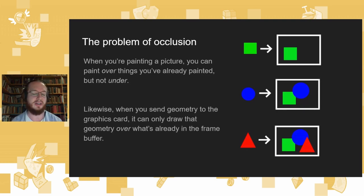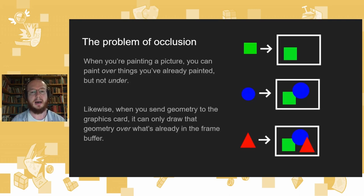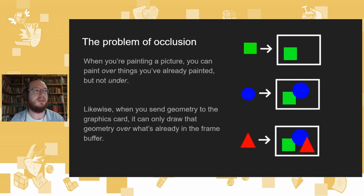If you ask anyone which object is in the front and which is in the back, everyone will give the same answer: the red triangle is in the front. That's just a feature of how memory works — when you assign a value over the top of something, it overwrites it.